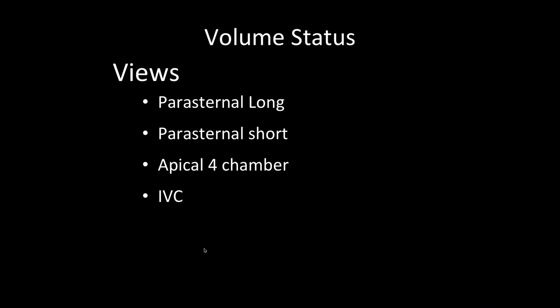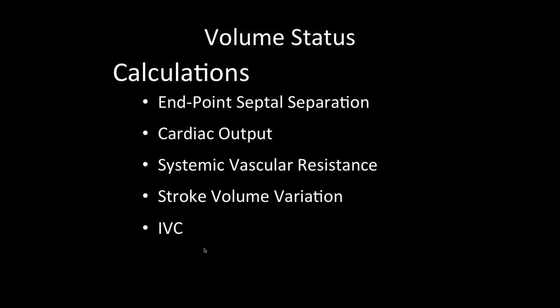So what is that whole picture? We're going to look at several views: parasternal long, parasternal short, apical 4 chamber, and the IVC. With those few views, we can calculate endpoint septal separation to estimate ejection fraction, cardiac output, systemic vascular resistance, stroke volume variation, and assess the IVC. Together, these give a sense of preload, afterload, and ejection fraction.